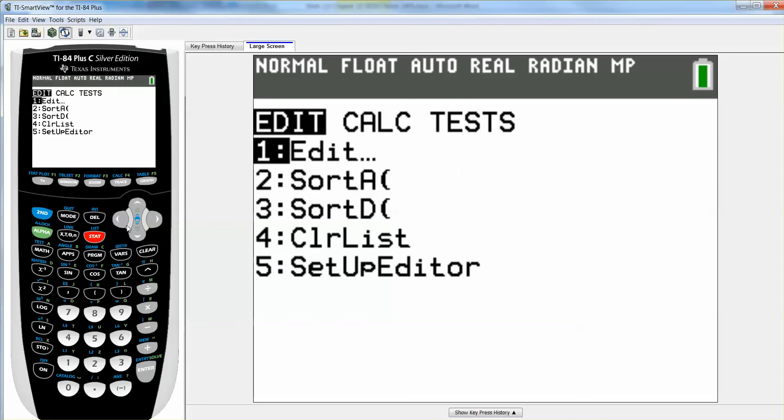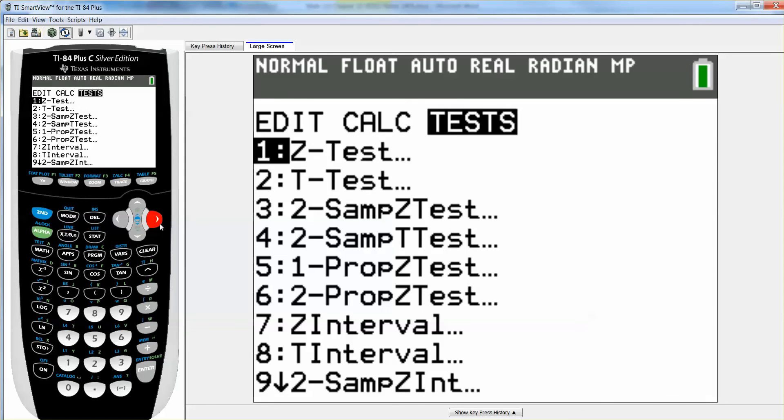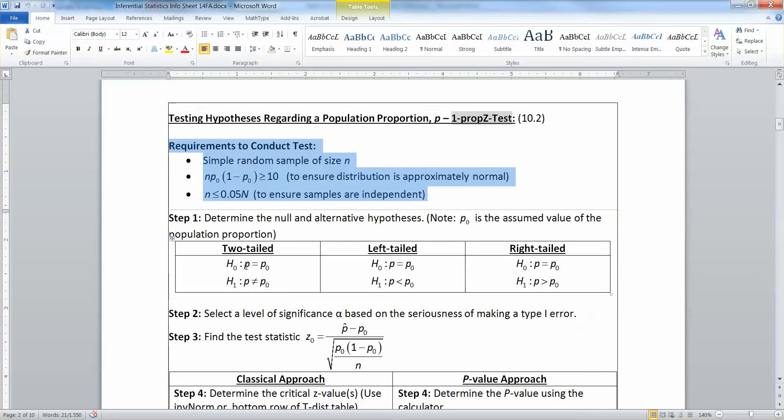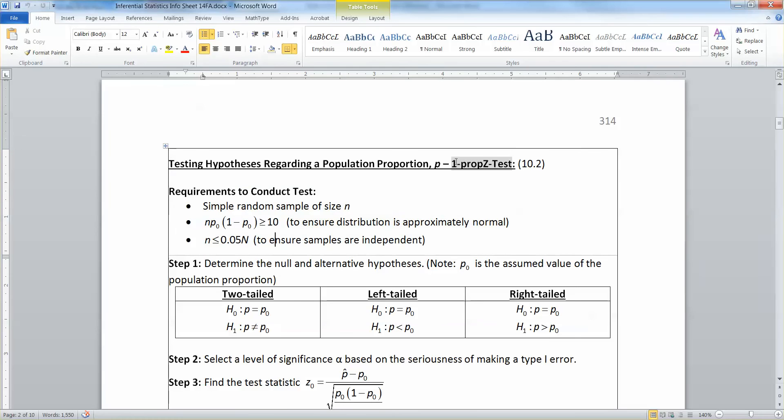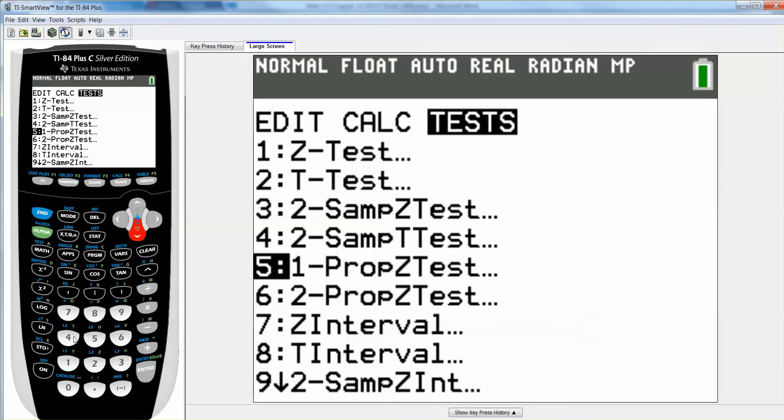So, let me grab the calculator. I'm going to go to stat. I'm going to go to tests. And then, when you're looking through the list of them, you might notice one that looks promising. The 1 prop Z test. 1, because this is a single sample, prop for proportion, Z test. But, that's what we're doing. We're doing a 1 prop Z test. And, in case you forgot, I tell you right at the top of the page, on your green sheet, in your inferential statistics packet, that you have to use 1 prop Z test.